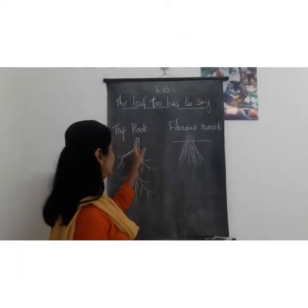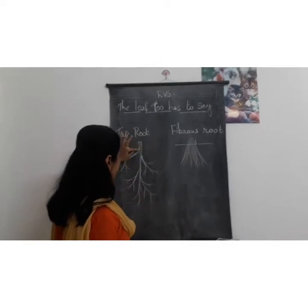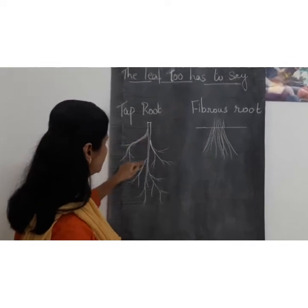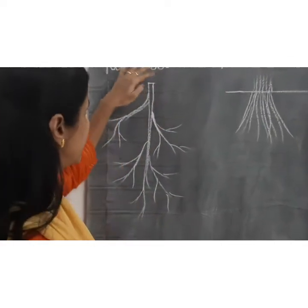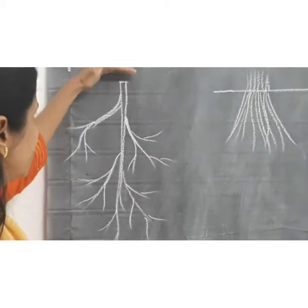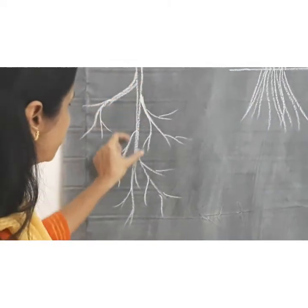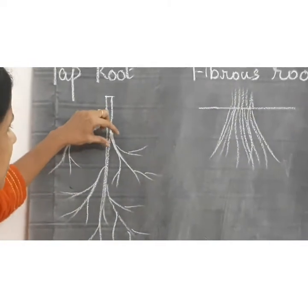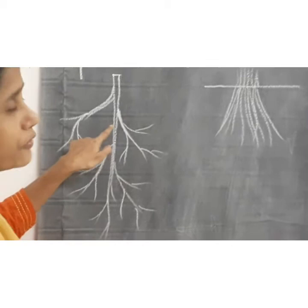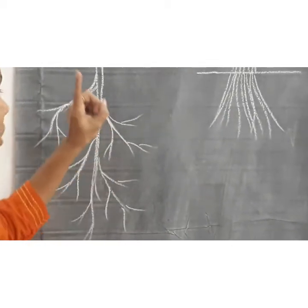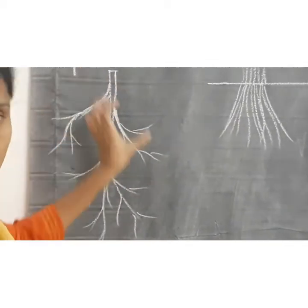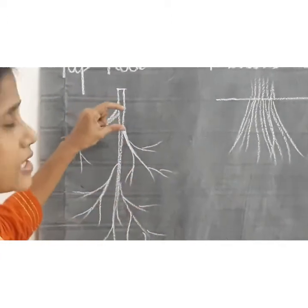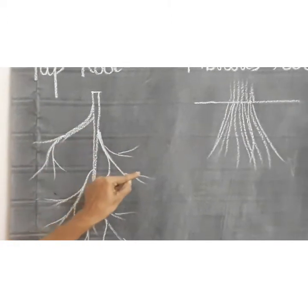In tap root there is one main root growing from the base of the stem. Here at the top it is the stem. And there are smaller roots also growing from the main root. So in the tap root, one main root will be there, growing from the base of the stem, and smaller roots will be growing from the main root.